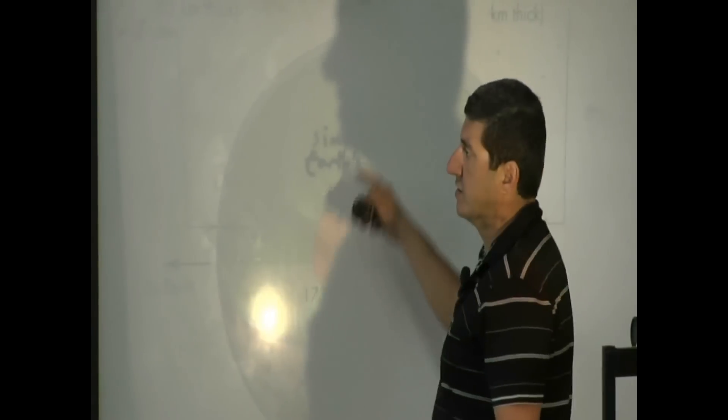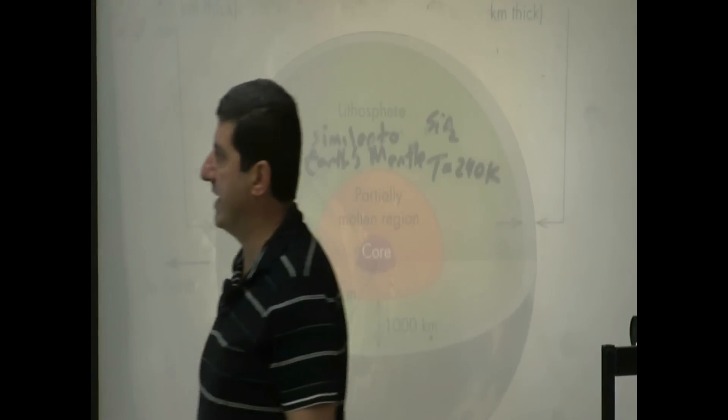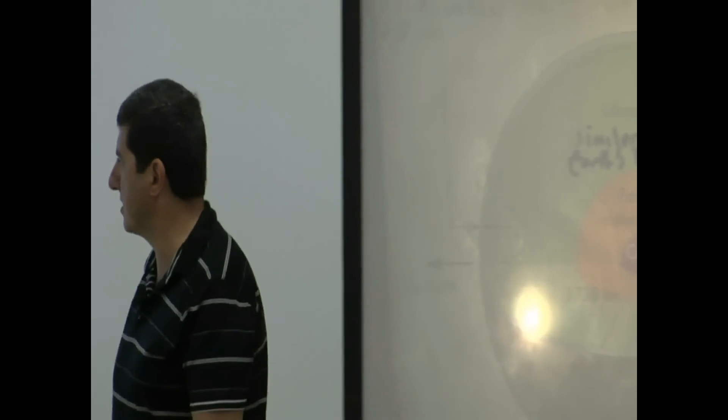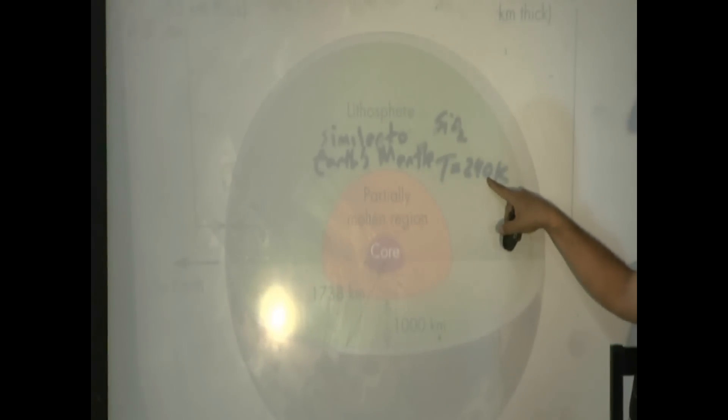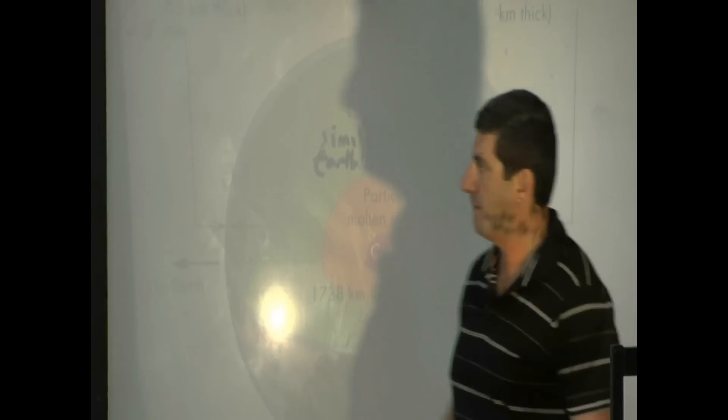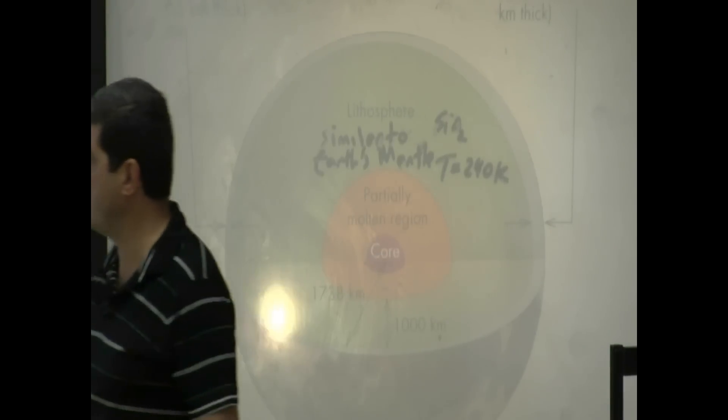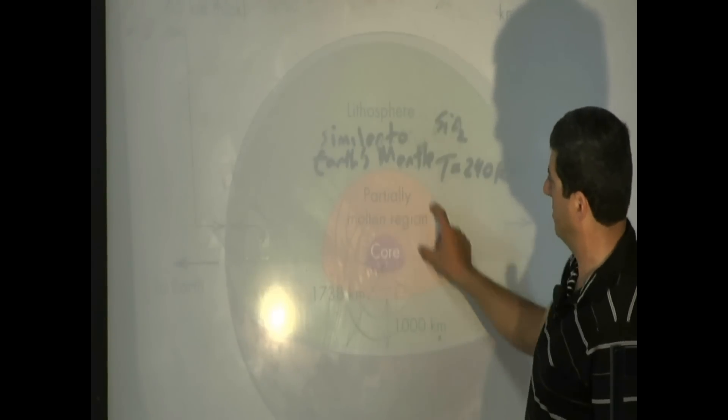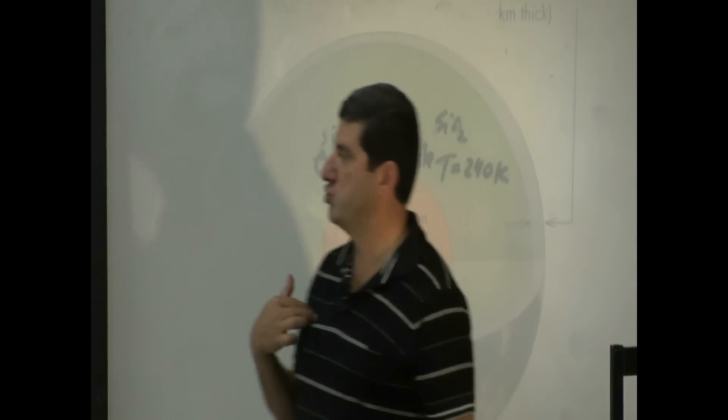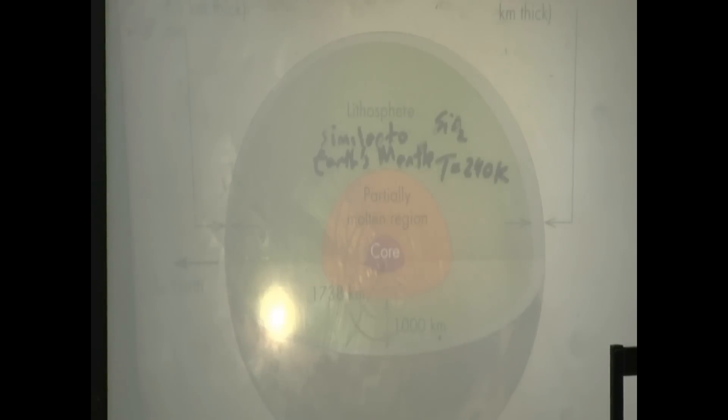So you've got the lithosphere, this one here, similar to Earth's mantle, and is about 1,000 kilometers thick. So the temperature of it would be 240 Kelvin, very, very cold. And some of the things it contains, silicon oxide. Partially molten region, that would be this one here, the one in orange, that would be similar to our, analogous to Earth's liquid outer core, but it is not liquid. It is about 500 kilometers.